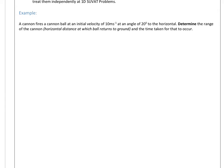So let's see how that works. We've got a very standard 2D SUVAT type problem. We've got a cannon, and it's going at 10 metres per second at an angle of 20 degrees. So let's put that in there, to the horizontal. Determine the range of the cannon.